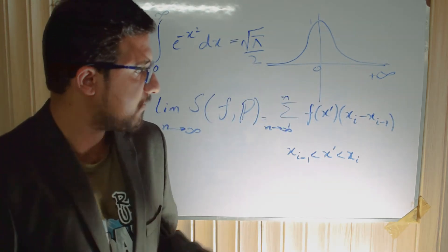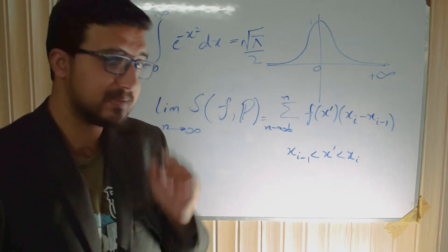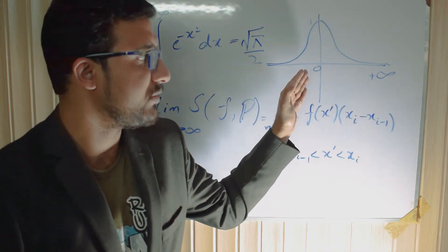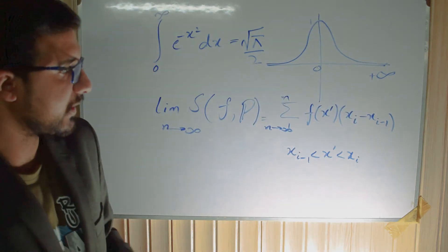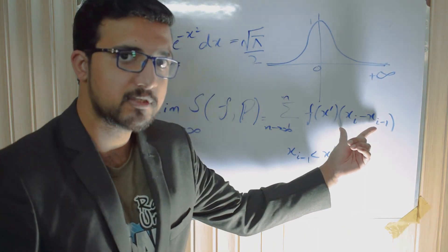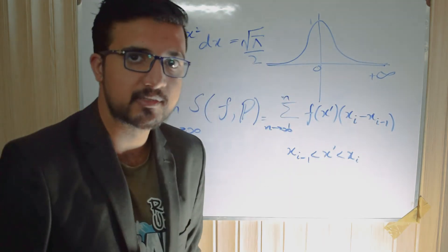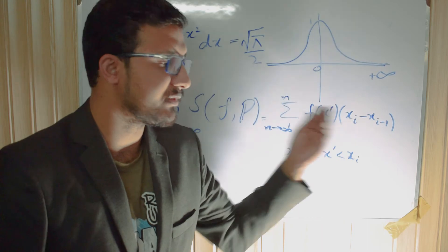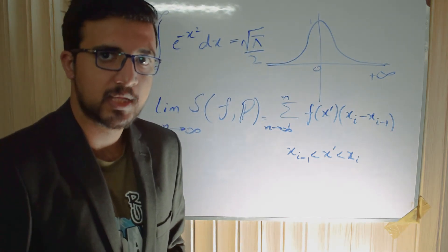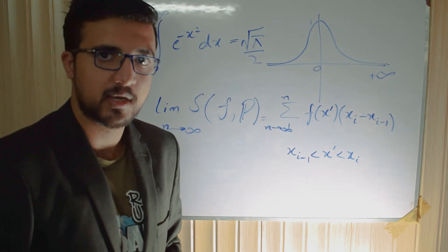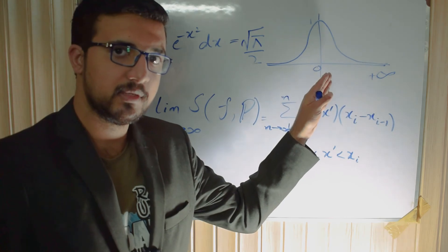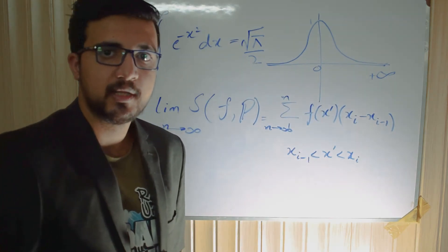The Riemann sum gives us the value of the integral if we move from left to right. In other words, delta x must go from left to right, meaning x_i is greater than x_{i-1}, so x_i minus x_{i-1} is always greater than 0. This is the condition of the Riemann sum — it always gives us the value of the integral from left to right, without any abnormalities.